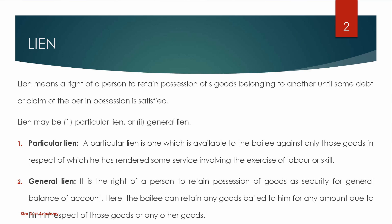For example, when we take a car to a mechanic for repair, the mechanic should keep the car until payment is received. After you keep the payment received, you should keep it right. This type of right is available — the right to retain the goods for the specific service rendered.